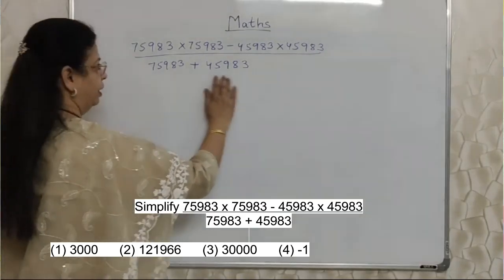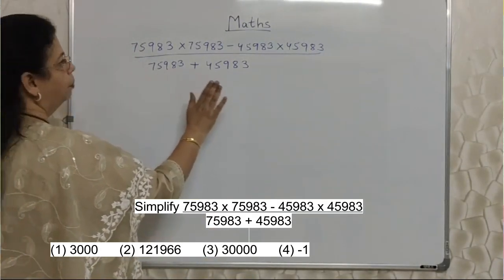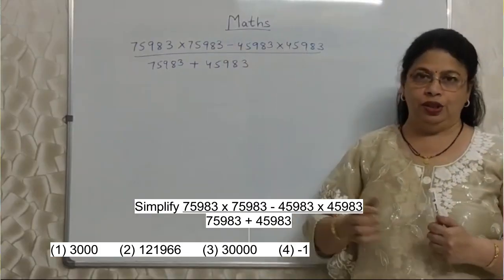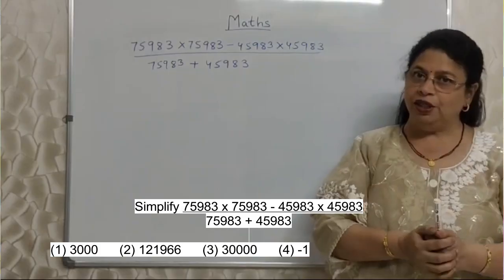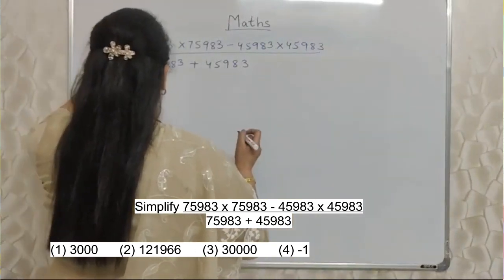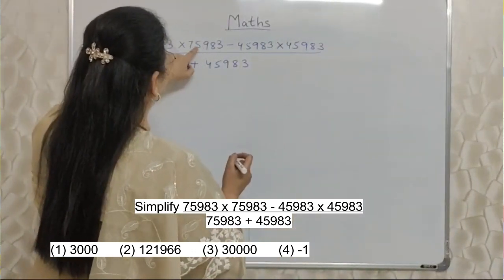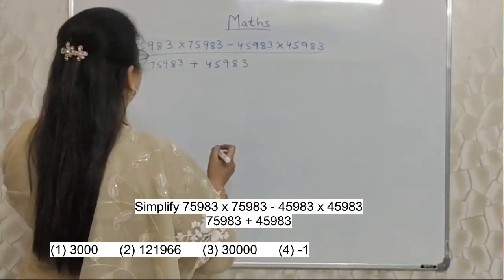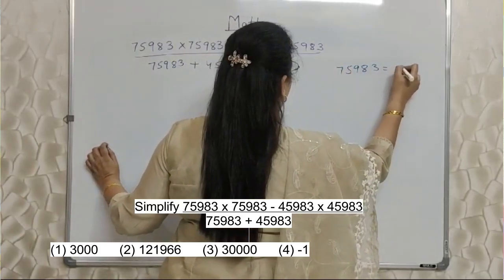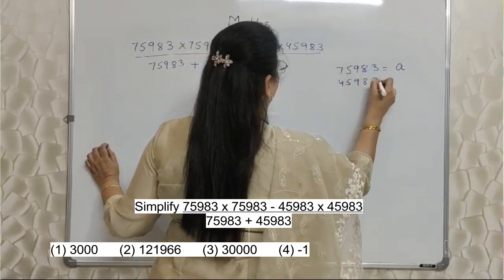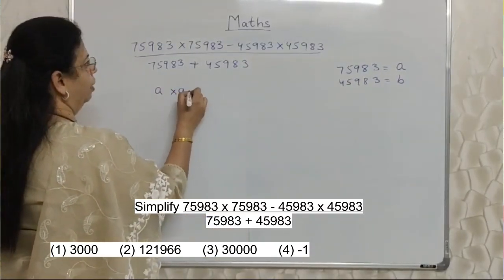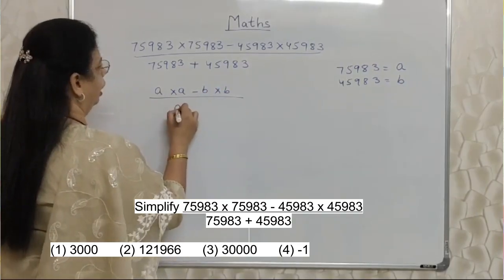Students, we need to simplify this — such big, big numbers. So obviously we are not going to multiply and do this stuff. We are giving cognitive exams, so there has to be a smarter way. Let's go ahead with the solution. We have 75983 and 45983 repeating. So instead of writing such big numbers, we will let 75983 equal a and 45983 equal b. We will rewrite this sum as: a into a minus b into b, upon a plus b.